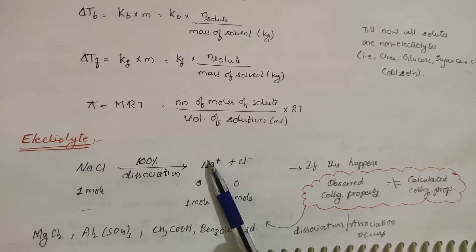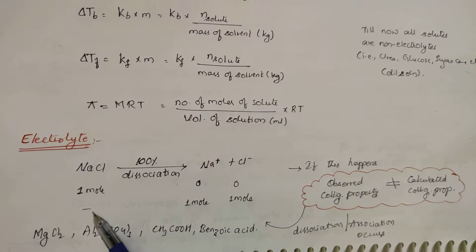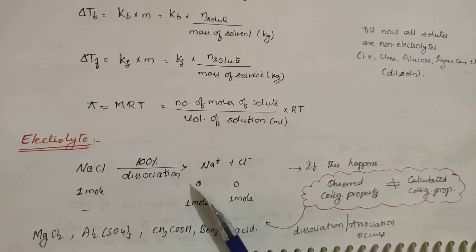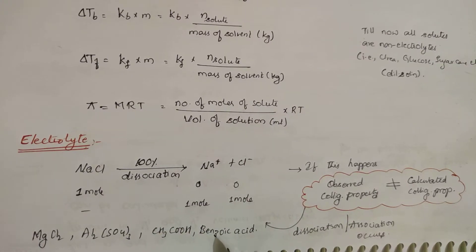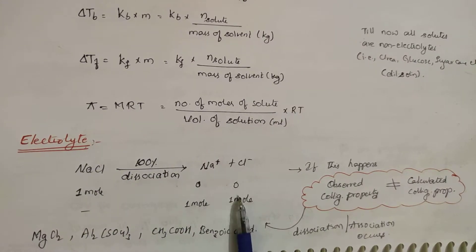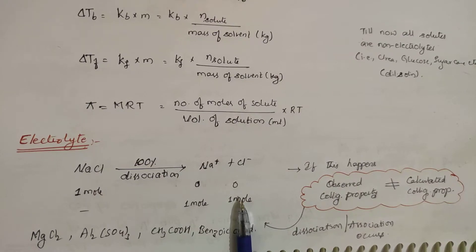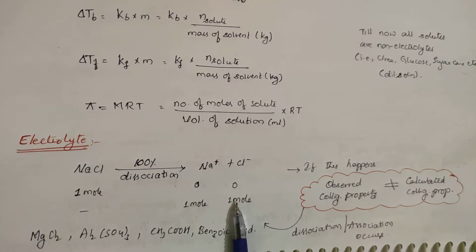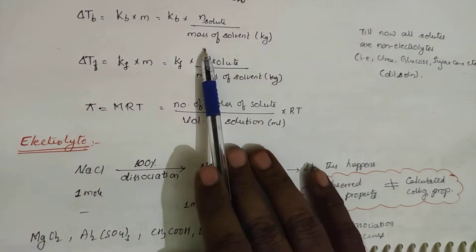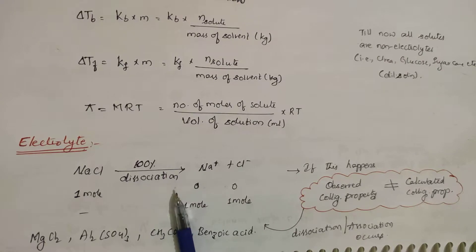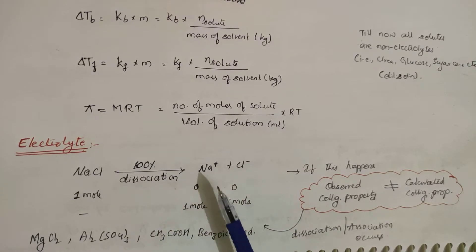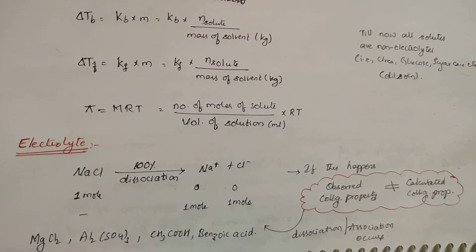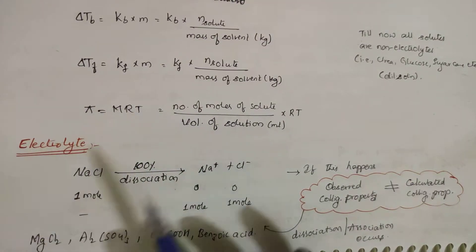Assume NaCl is 100% dissociated. Initially you have one mole of NaCl, zero moles of Na⁺, and zero moles of Cl⁻. After complete dissociation, NaCl becomes Na⁺ and Cl⁻ — one mole each. So from one particle you get two particles. Colligative properties depend on the number of particles, so the observed colligative property will differ from the calculated one.